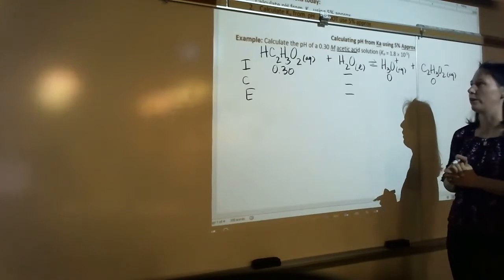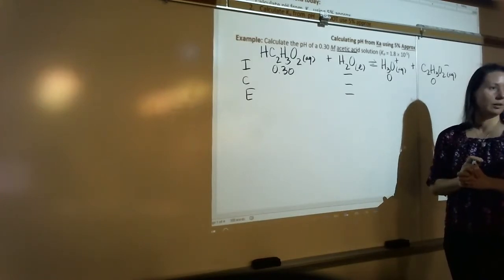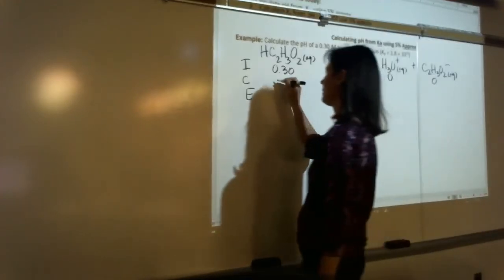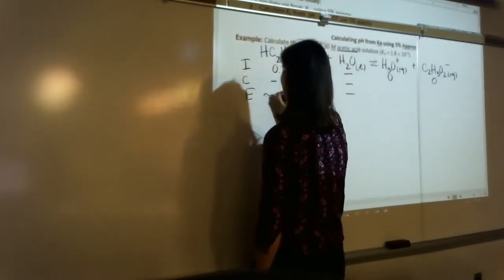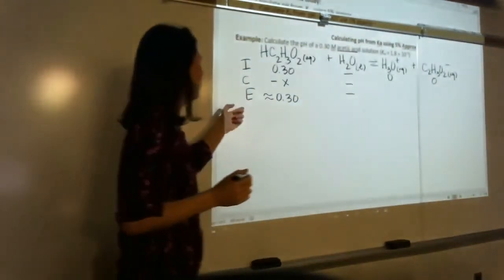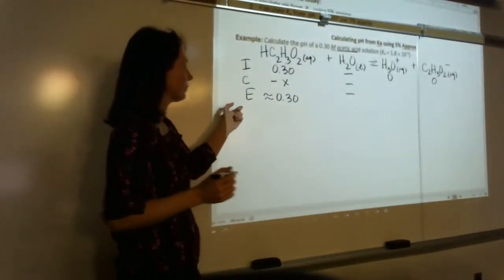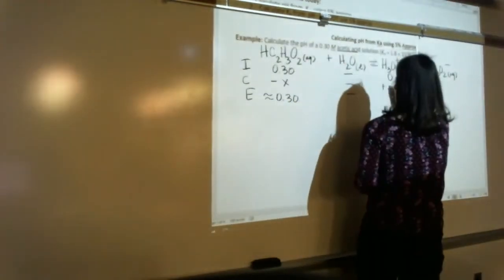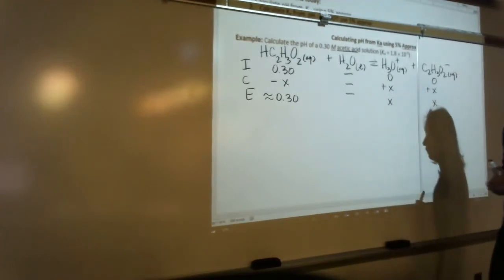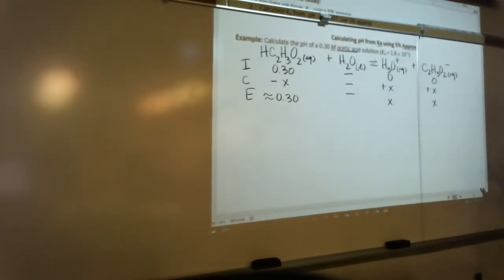Ka is less than 1, so can we use the 5% approximation? Yes, we're going to, right? Using the 5% approximation. So this goes down by x, but we're going to assume that x is so small that it doesn't significantly change the equilibrium value. This is going to go up by x, so it's x at equilibrium. This is going to go up by x, so it's x at equilibrium.